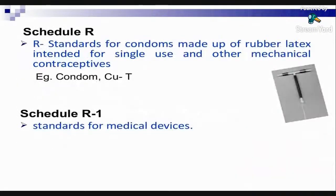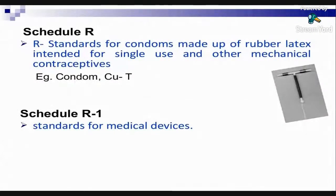Schedule R contains the standards for condoms made of rubber latex intended for single use and other mechanical contraceptives, such as condoms and copper-T. Schedule R1 contains standards for medical devices.